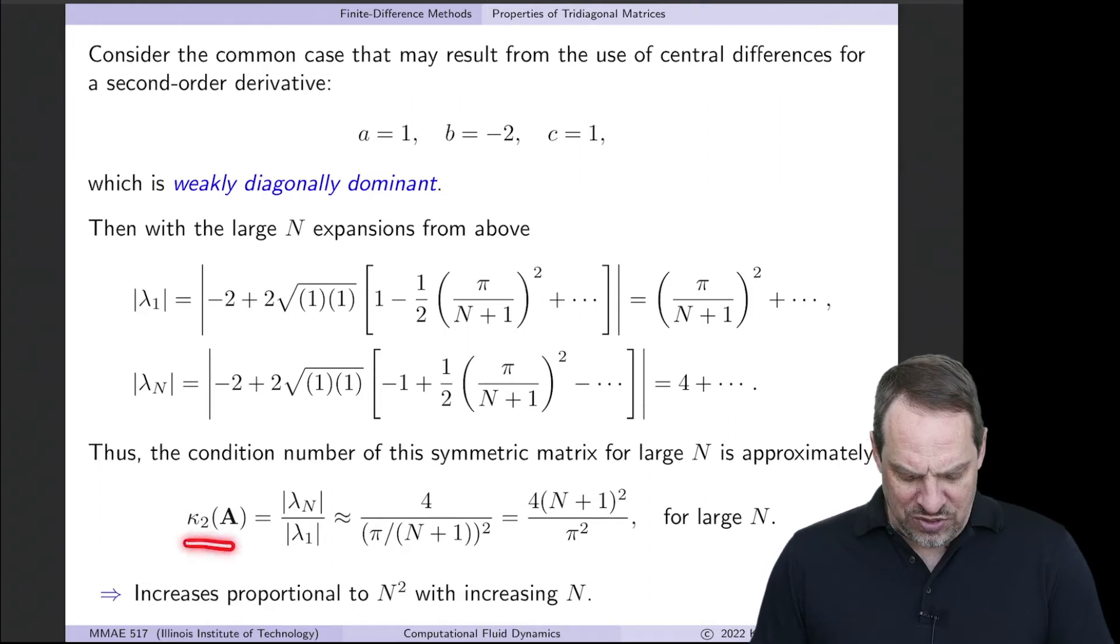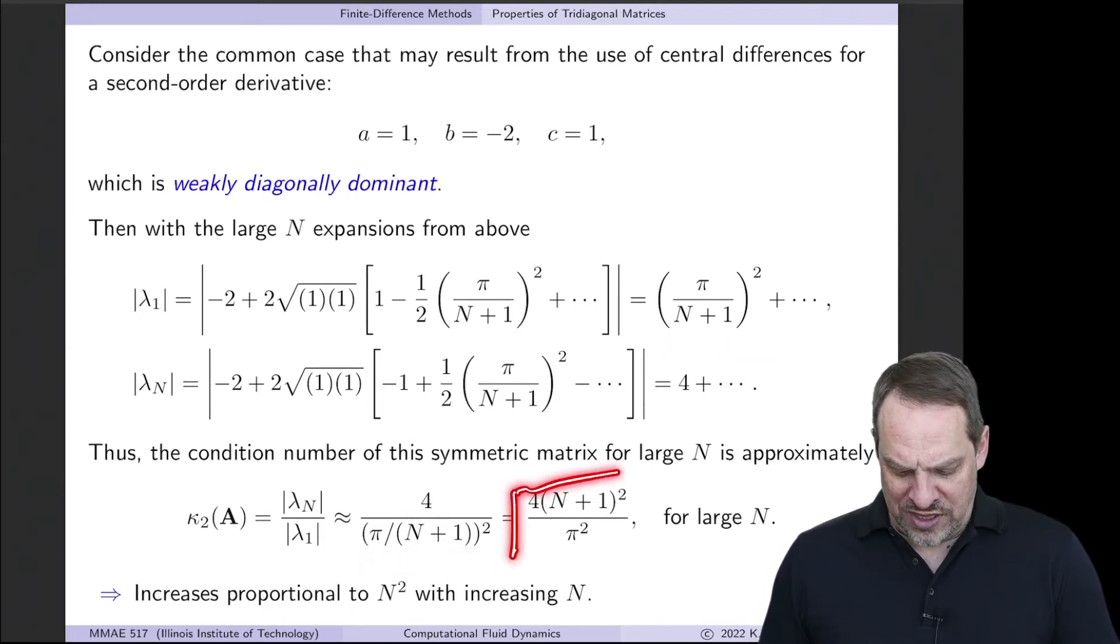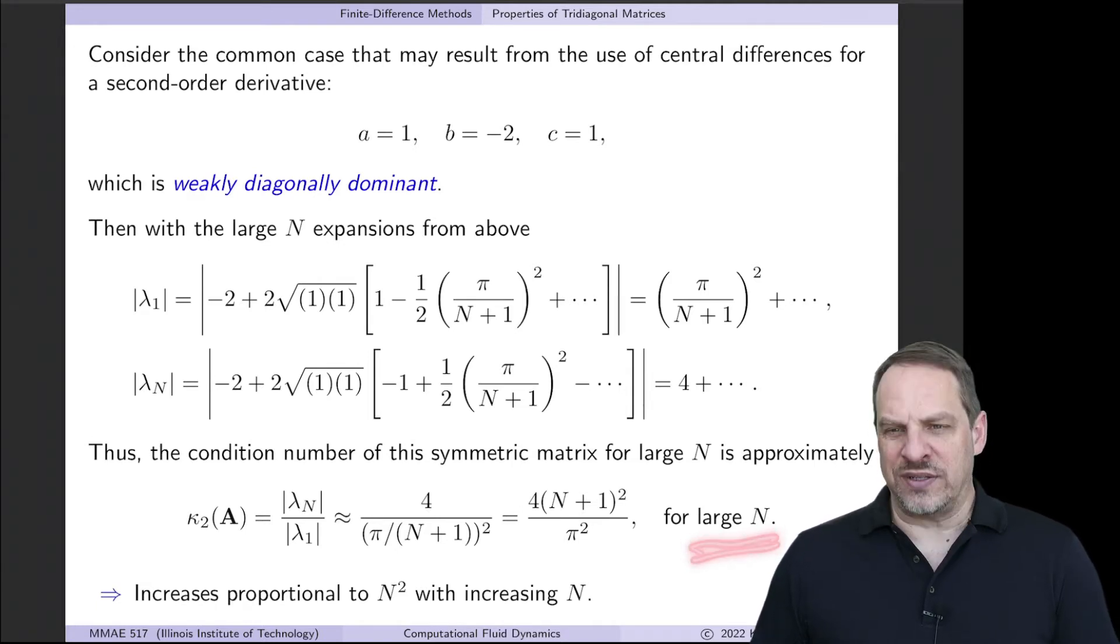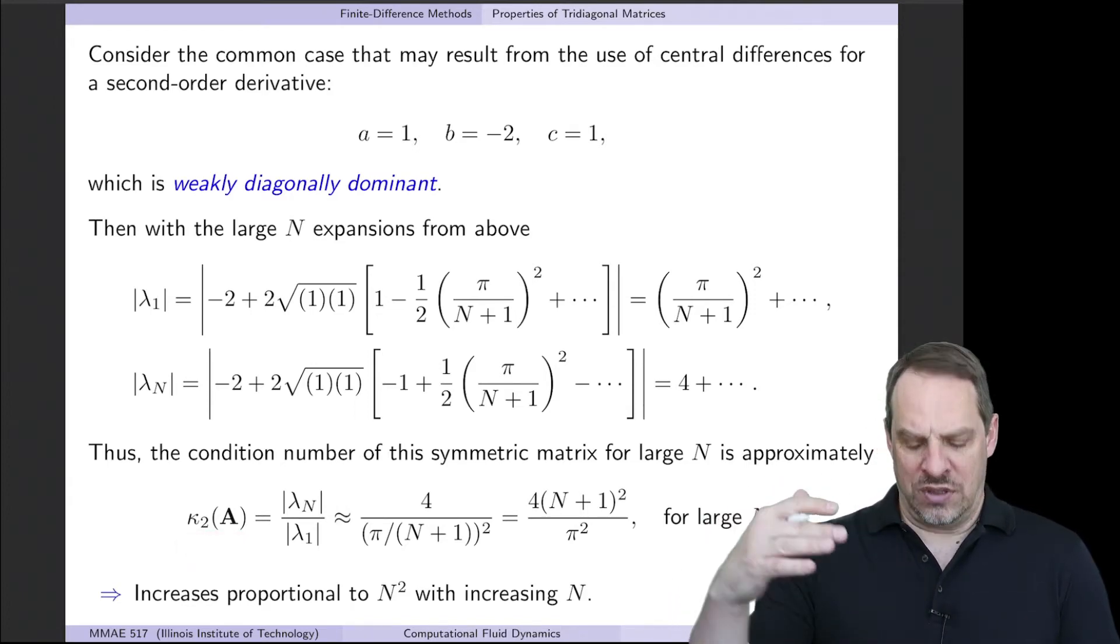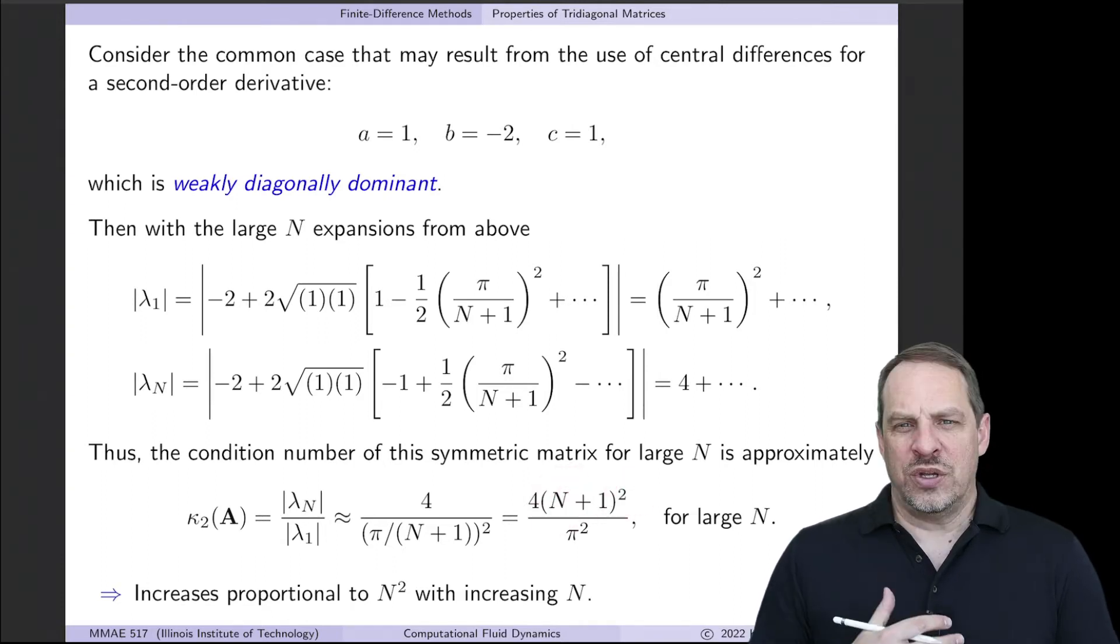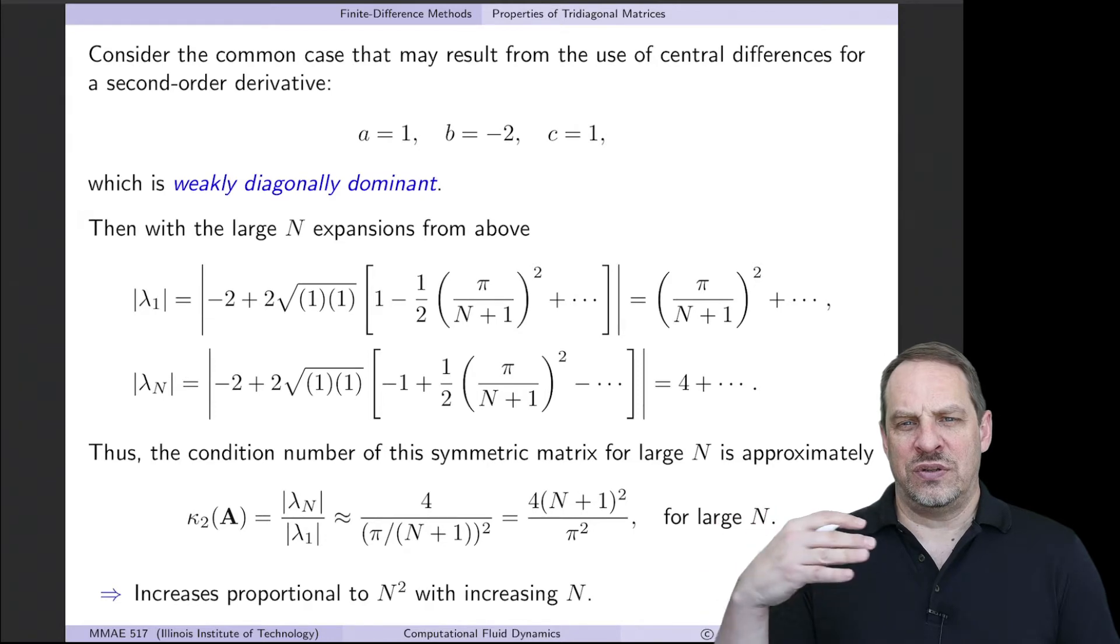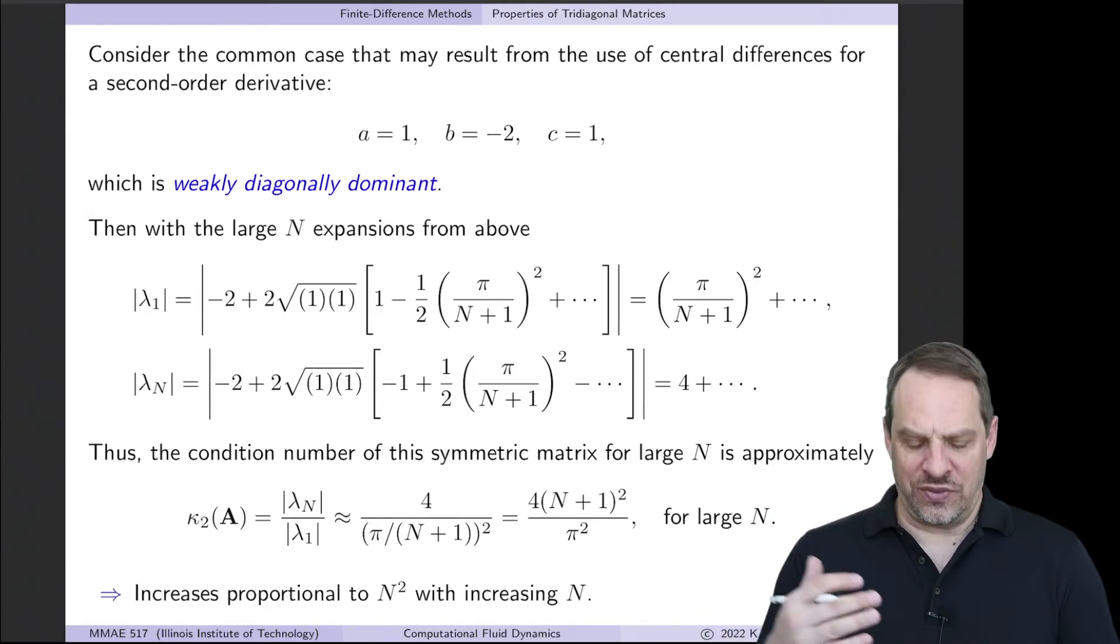So then the condition number is the ratio of the largest to the smallest of the eigenvalues. Now that's only true for a symmetric matrix, but in this case it is symmetric, because the c and the a are the same. So then the largest is 4. So it's 4 over the smallest, which is the square of π/(N+1). So we can express that in this form: 4/π² times (N+1)². Now this is a large N approximation. So this is showing how the condition number changes as we increase N. And you'll notice it goes like N². So that's a very rapid increase. As N increases, the condition number is increasing like the square of capital N.